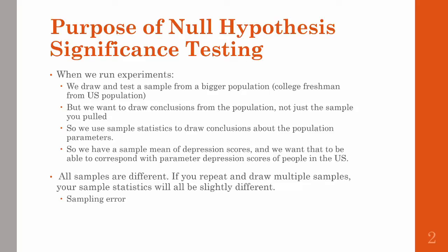We know that all samples are different, and if you do a study over and over again by getting multiple samples, your results will be slightly different each time. The extent to which these statistics vary is referred to as your sampling error.